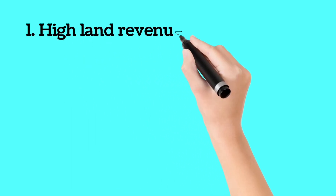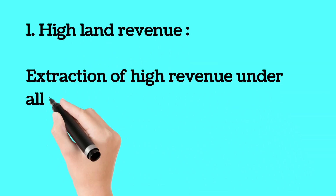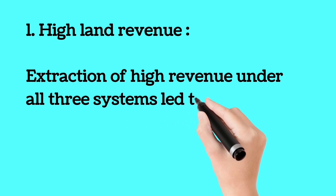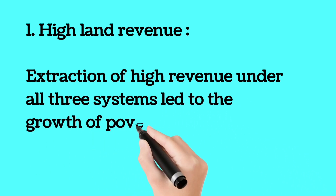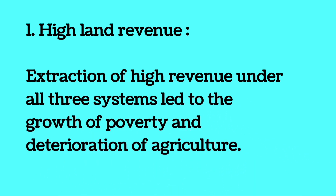One: High land revenue extraction. The collection of high revenue under all three systems led to the growth of poverty and deterioration of agriculture.